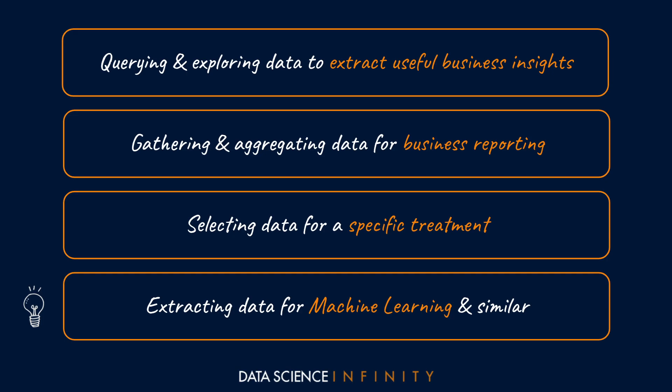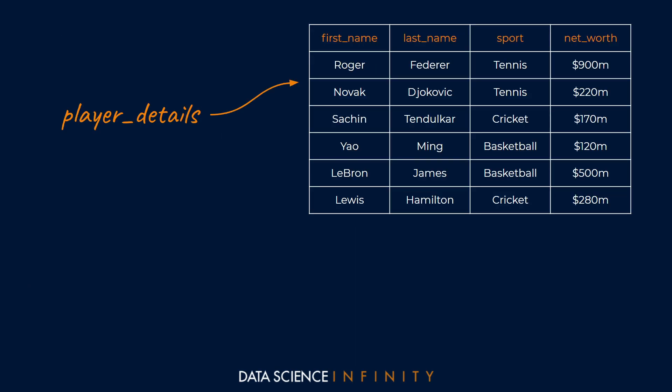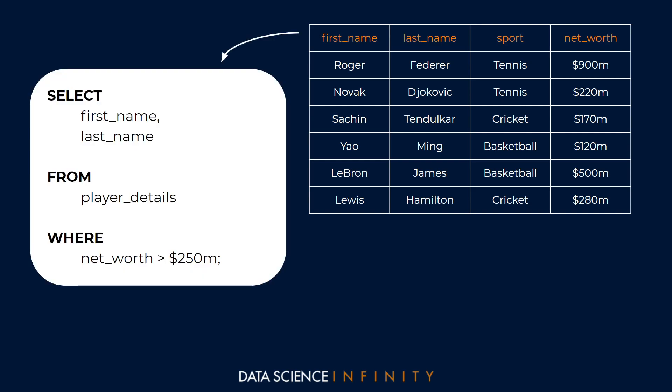Now you know a bit about what SQL is, what it can do, and why it's important. Let's take a quick look at what some SQL code might look like. Here on screen for illustrative purposes I've got a player details dataset containing six famous sports people. The table has four columns: first name, last name, sport, and net worth. Let's say we are the owner of Rolex looking for a new spokesperson for our elite range of watches.